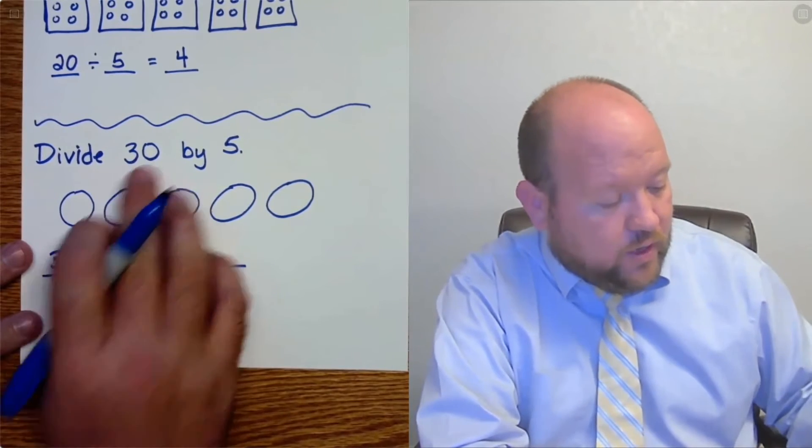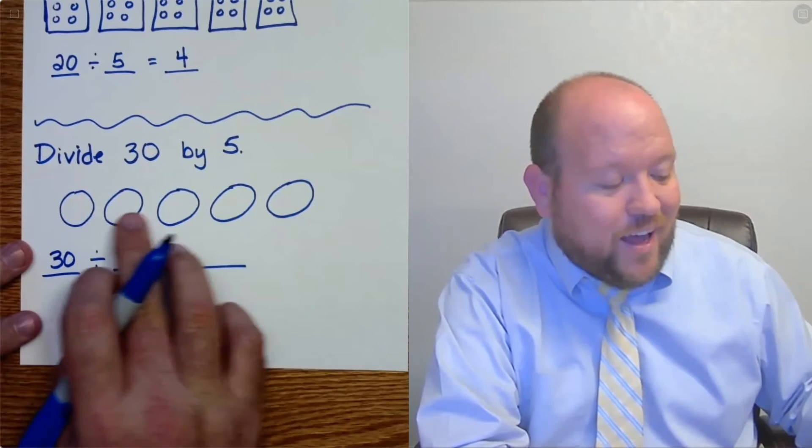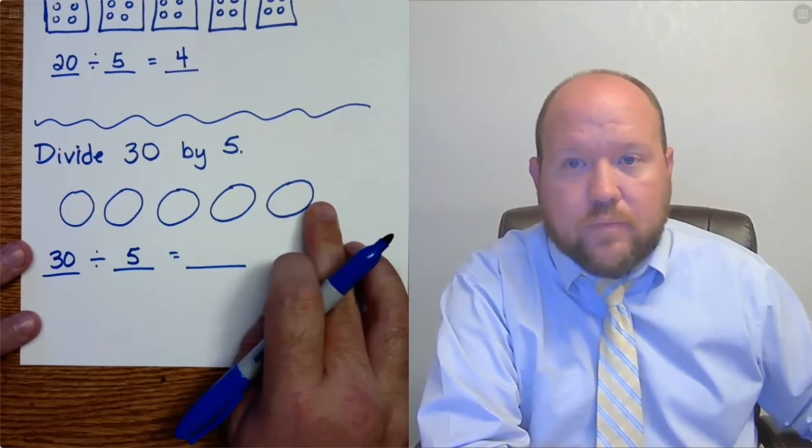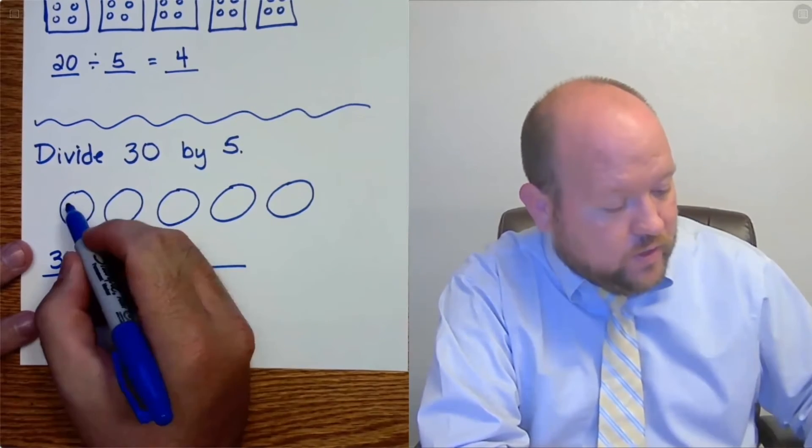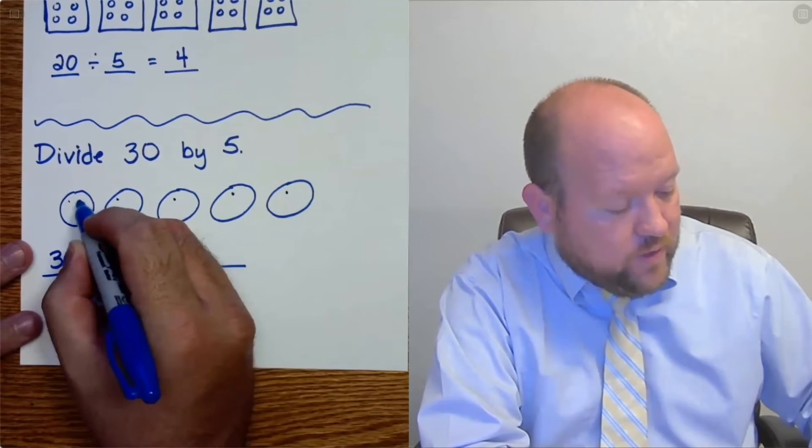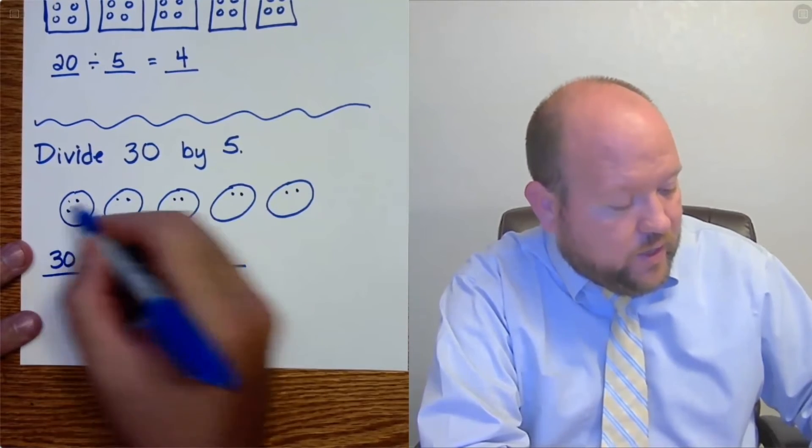So I have the number 30 here and I have 5 circles. And what I'm going to do is I'm going to place a dot in each one over and over in a pattern until I run out. So 1, 2, 3, 4, 5, 6, 7, 8, 9, 10, 11.